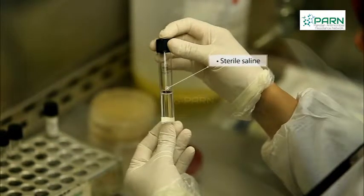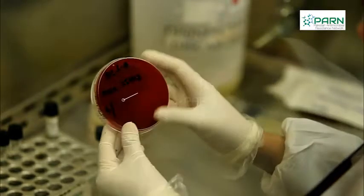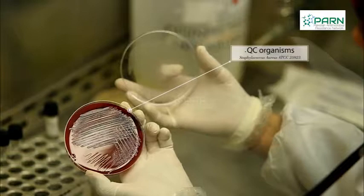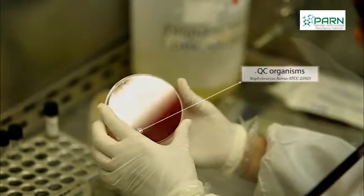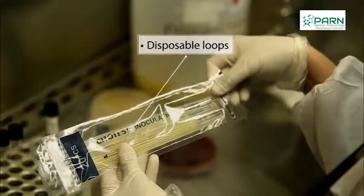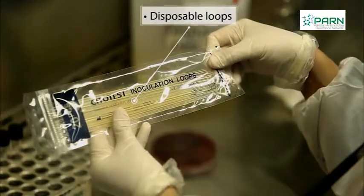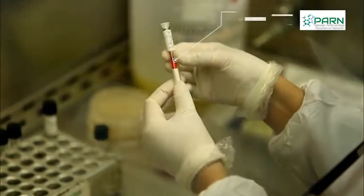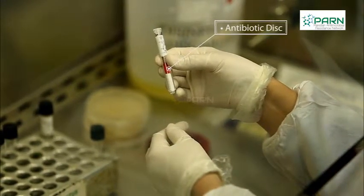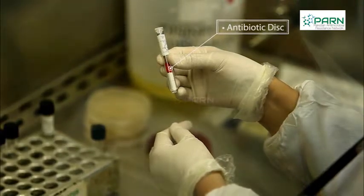Quality control organisms include Staphylococcus aureus ATCC 25923. Other requirements include disposable loops or wire loops and antibiotic discs. The antibiotics are selected on the basis of organisms and source of isolate, for example blood, urine, etc.